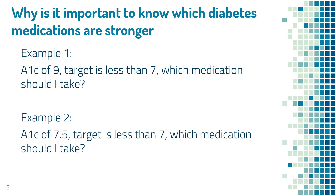Why is it important to know which diabetes medications are stronger? I will show you with two examples. In the first example, this person has an A1C of 9 and the target for A1C is less than 7. So which medication should I take? If you do not know what A1C is, please go to hmf-diabetes.com and look it up.